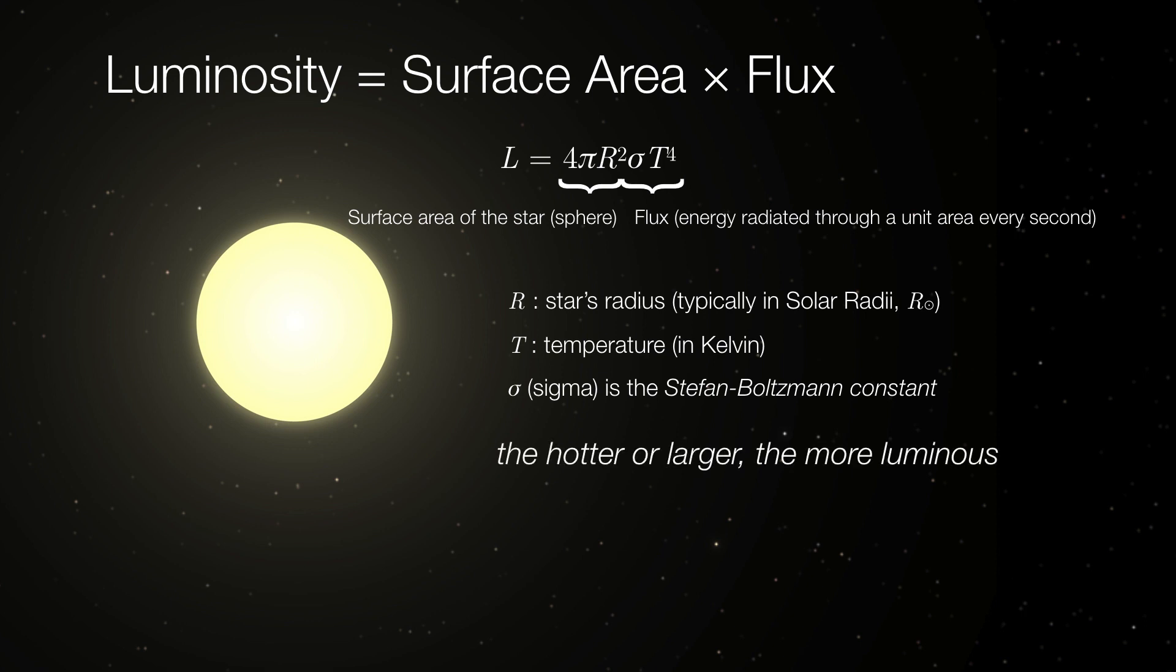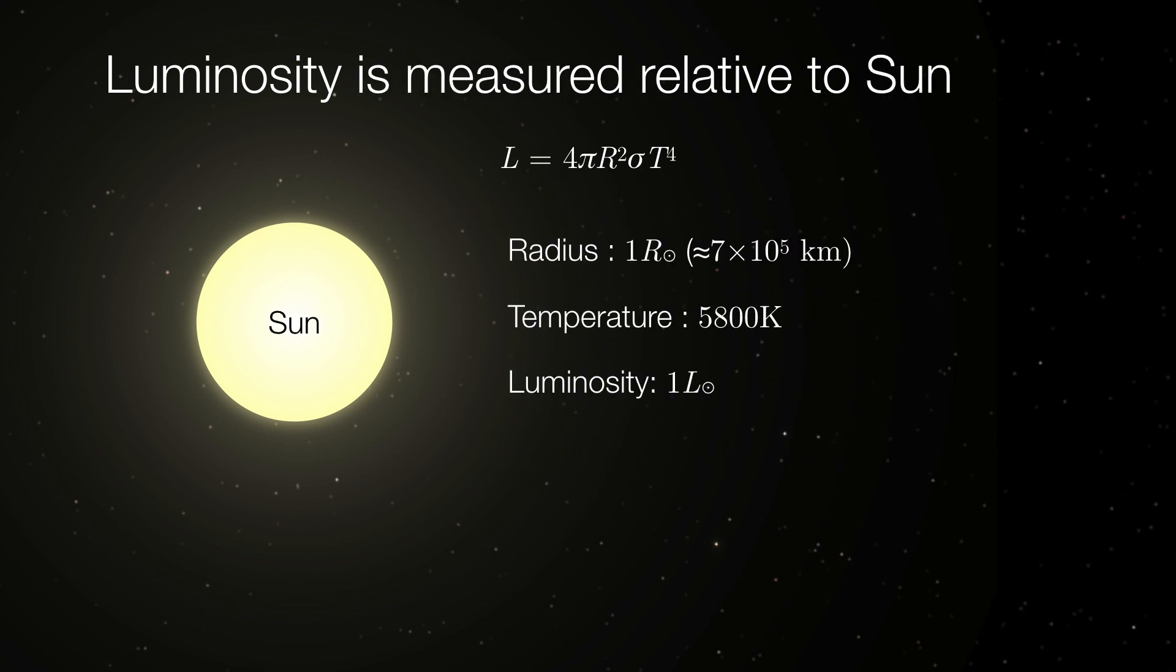So the hotter or larger the star, the more luminous it's going to be. We compare everything to the sun, so we'll define the radius as one solar radius. Temperature is often measured in Kelvin. So the surface temperature of the sun is about 5,800 Kelvin, so we would say that its total luminosity is one solar luminosity.